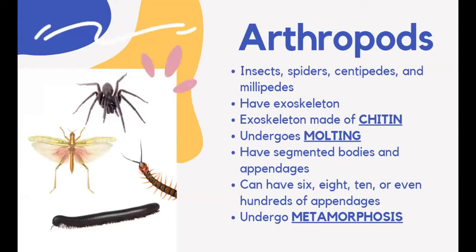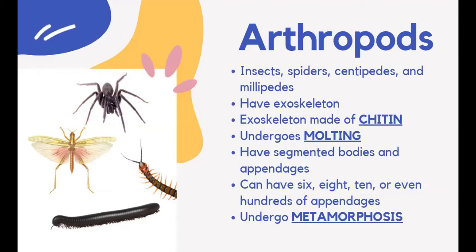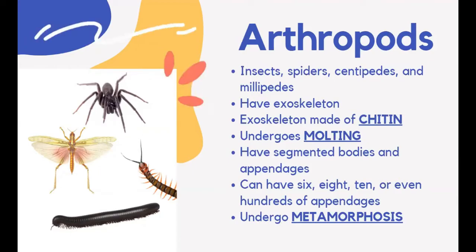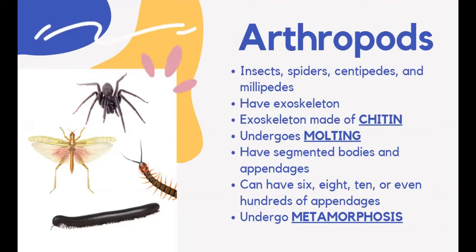Arthropods are a diverse group of animals that live in oceans, fresh water, on land, and in air. They include insects, spiders, centipedes, and millipedes. The entire body of arthropods is covered by a hard outer skeleton called an exoskeleton, made out of chitin, which supports their body weight. Arthropods undergo molting when they get bigger — they shed and split their exoskeleton. They feed on plants, other animals, and even dead matter. Some are filter feeders, while some are parasitic.